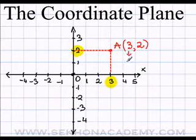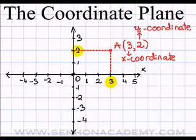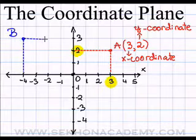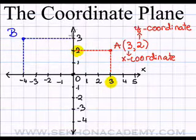And the number located on the y-axis is two. The first number is the x-coordinate, and the second number is the y-coordinate of point A. The order is very important. So A has coordinates three and two.